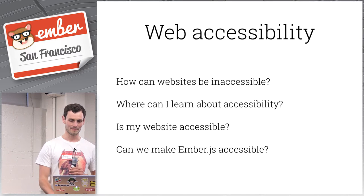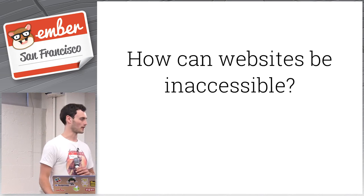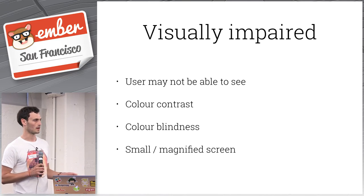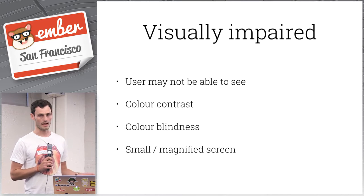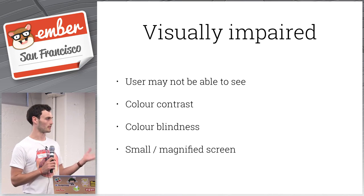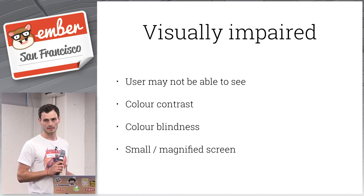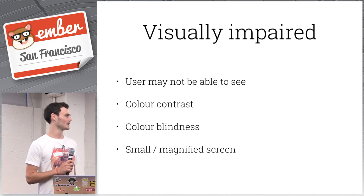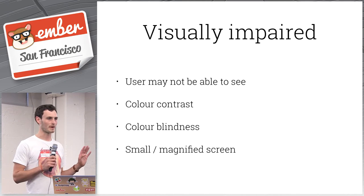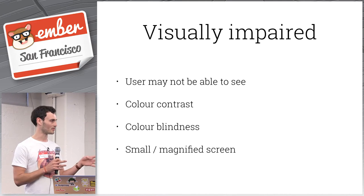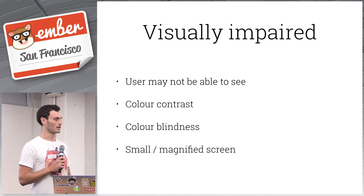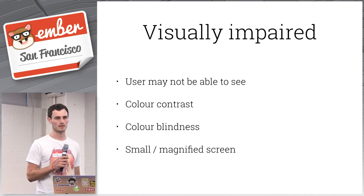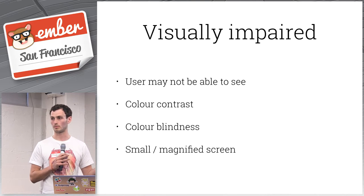The first way websites can be inaccessible is for people who are visually impaired. This isn't just being completely blind — you can have limited vision, difficulty picking out similar colors, or color blindness, which isn't necessarily full monochrome. It might be that you confuse two specific colors.